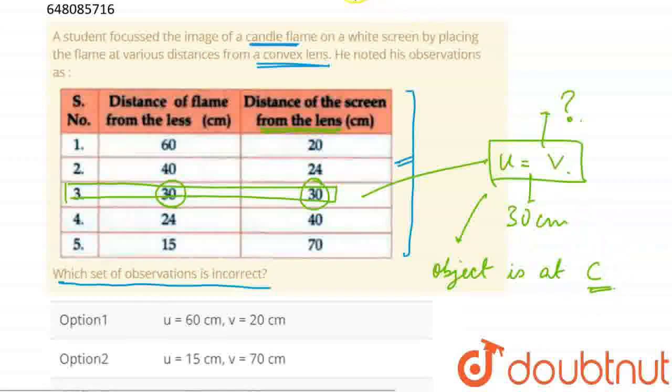What is the distance from the pole? So if it is at the center of curvature, it means that focus is 15 cm.